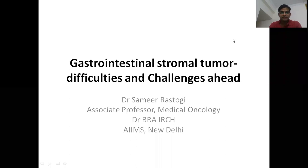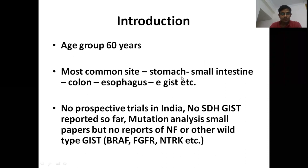Good morning. Today I will discuss gastrointestinal stromal tumour (GIST) difficulties and challenges. It can happen at any age; however, it's most common at around 60 years — it happens in older individuals. If it happens in younger patients, we need to consider syndromes. The most common sites are stomach, small intestine, and colon, followed by extra-intestinal GIST. Unfortunately, research on GIST in India has happened very little so far.